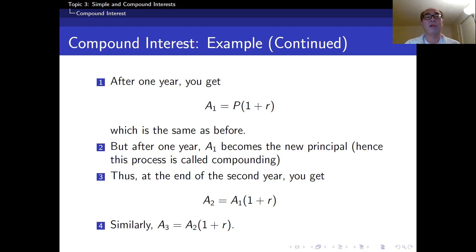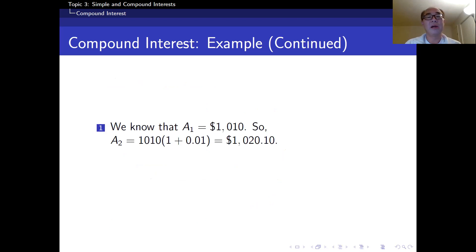Similarly, for the third year, you're going to have A sub 3 is equal to A sub 2 times 1 plus R. So here again, the principle is A sub 2, not P. So here's what's going to happen. We know that A sub 1 is equal to $1,010. So A sub 2 is, now A sub 1 is a new principle. That's why I have $1,010 at the front. Then I multiply 1 plus 0.01, which is $1,020.10. Similarly, A sub 3 is equal to now, the principle is $1,020.10 times 1 plus 0.01, which is $1,030.30.